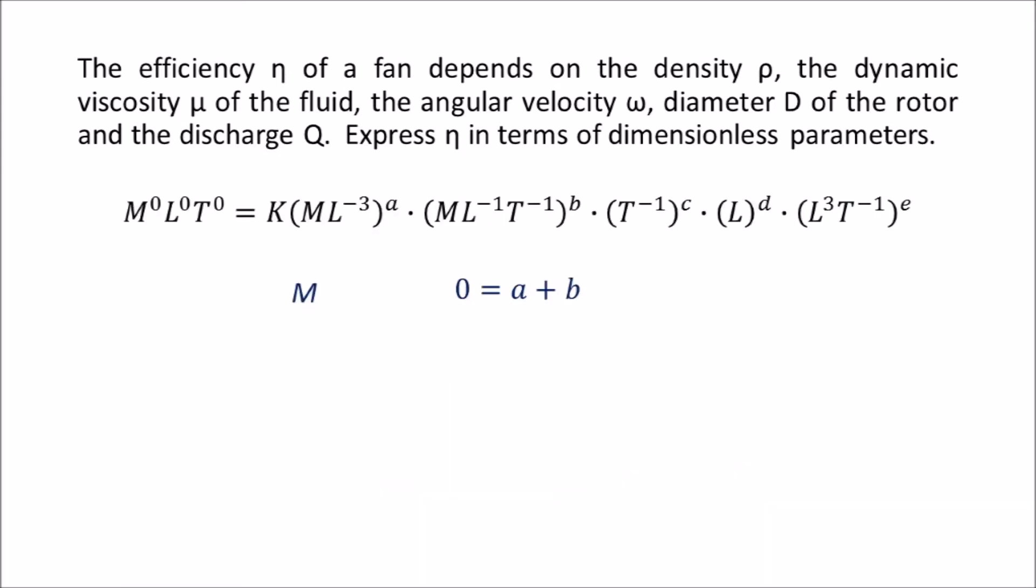The next step is to equate the exponents for each dimensional term on the left-hand side to those on the right-hand side. So for the mass term, we have zero on the left-hand side. We have a from our first term on the right-hand side, and b from our second term on the right-hand side.